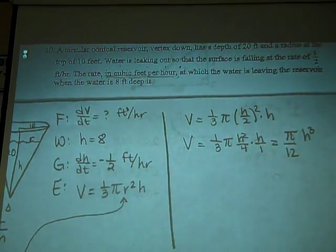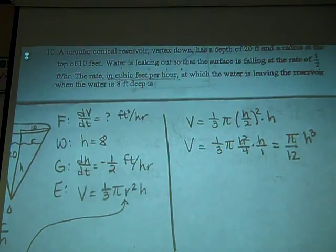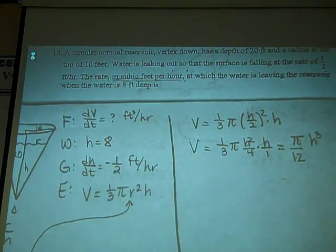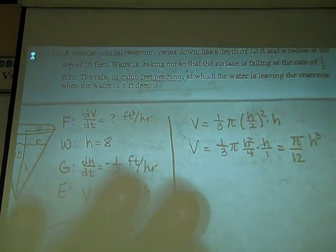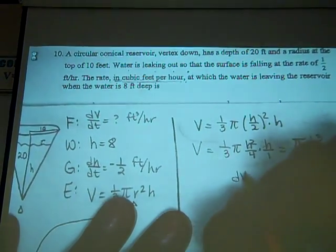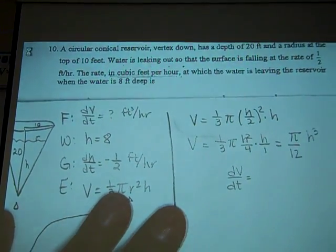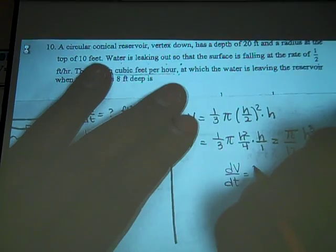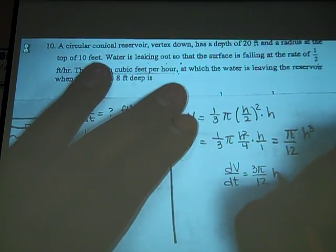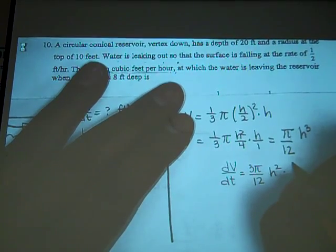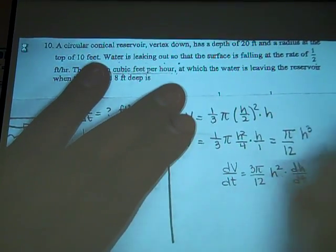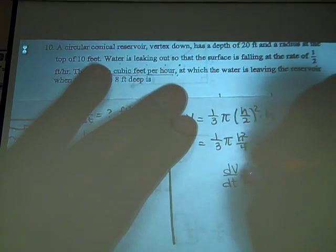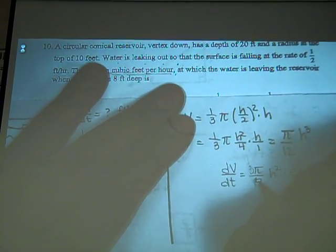Take the derivative. Take the derivative of everything with respect to time. What's the derivative? 3 pi over 12 H squared times dH/dt. But someone said 3 over 12, but somebody else could call that 1 fourth.